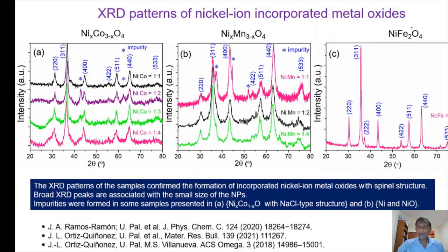In the case of nickel ferrite, we prepared only one sample with a nickel-to-iron ratio of 1:2, and we got perfectly the spinel structure with very sharp X-ray diffraction patterns, which indicated that the particles are highly crystalline.